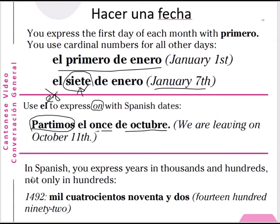Rule three: in Spanish, you express years in thousands and hundreds — not just in hundreds. In English we may say 'fourteen ninety-two' or 'fourteen hundred ninety-two,' but in Spanish you must say 'one thousand four hundred ninety-two': 'mil cuatrocientos noventa y dos.'